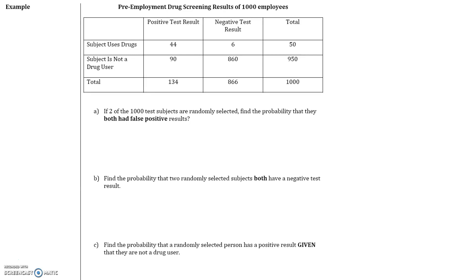What is a false positive? A false positive means that the subject got a positive test result but the subject is not a drug user, which is why it's a false result. So this is a false positive result.